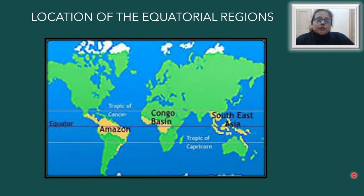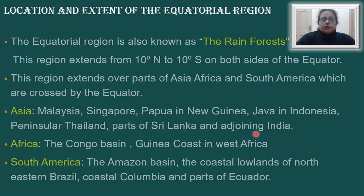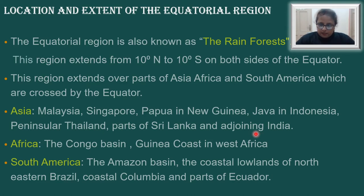As far as the location of the equatorial regions is concerned, as the name suggests, all areas along the equator have an equatorial type of climate. They extend to about 5 degrees north to about 10 degrees south of the equator. The equatorial regions are also known as the rainforests, and they extend roughly 10 degrees north to 10 degrees south on both sides of the equator, over large areas of Asia, Africa, and South America which are crossed by the equator.